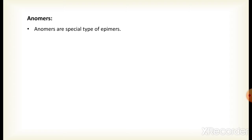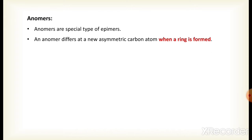The next concept of this video is anomers. Anomers are a special type of epimers. An anomer differs at a new asymmetric carbon atom when a ring is formed. When linear carbohydrates are converted into cyclic form, the new asymmetric carbon atom formed is considered the anomeric carbon atom, for the formation of anomers.